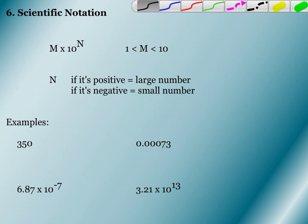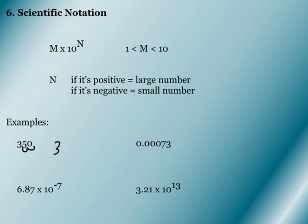If you have to put something into scientific notation, you take your decimal wherever it is, and you're going to move it to make it between 1 and 10. So this first one, we obviously have to move it to the left. So we move it 2 to the left, and that means it's going to be 3.50 times 10 to the second.